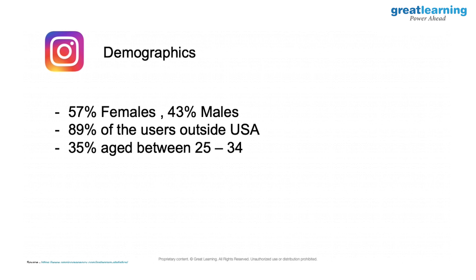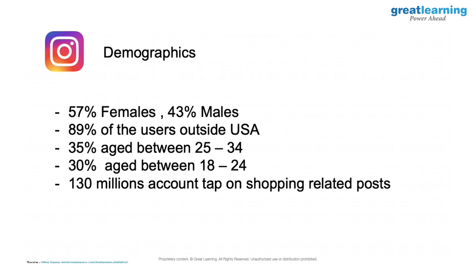Initially when Instagram was launched, it was a photo-sharing app catering mainly to teenagers or younger generations. But over time the audience has evolved. Now there are a lot more people in the age bracket of 25 to 34, currently at 35%. 30% of people are aged 18 to 24, which is generally the college-going group. Also, 130 million accounts tap on shopping-related posts, meaning users are engaging in activities related to shopping and e-commerce on Instagram — a huge opportunity that makes Instagram marketing all the more important.